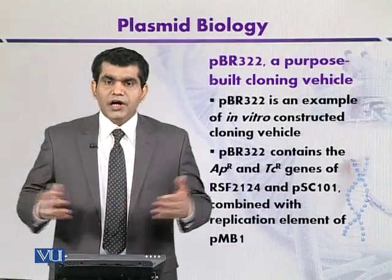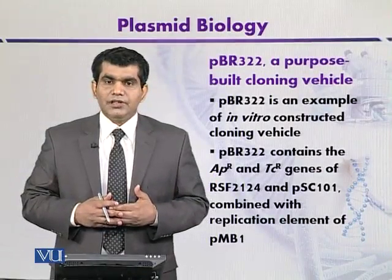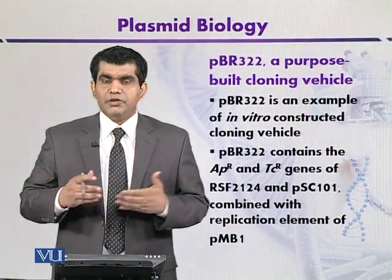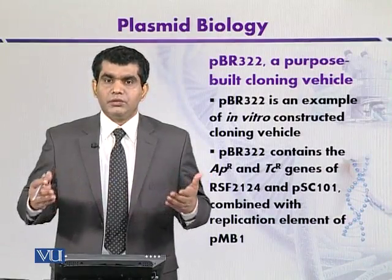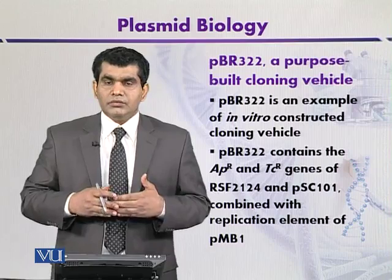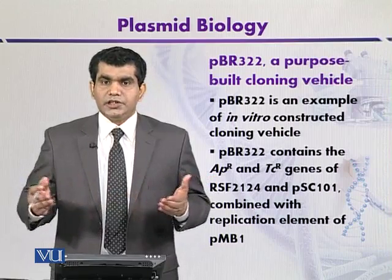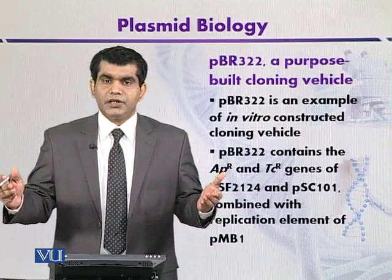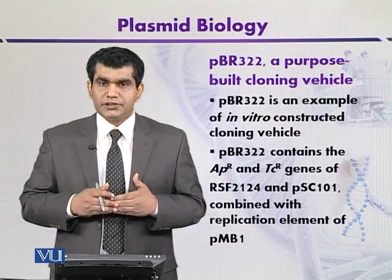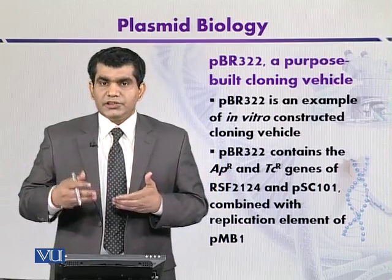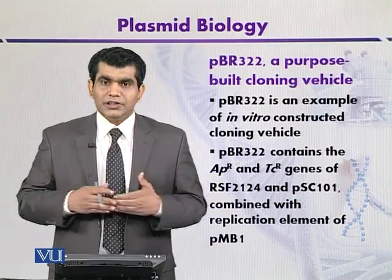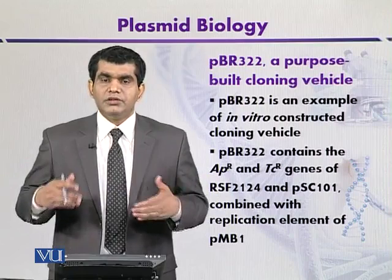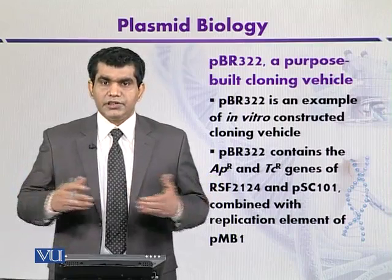Natural plasmids can be used for DNA cloning because they contain single restriction sites for different types of endonucleases. Additionally, they also contain selectable markers like the genes for antibiotic resistance.